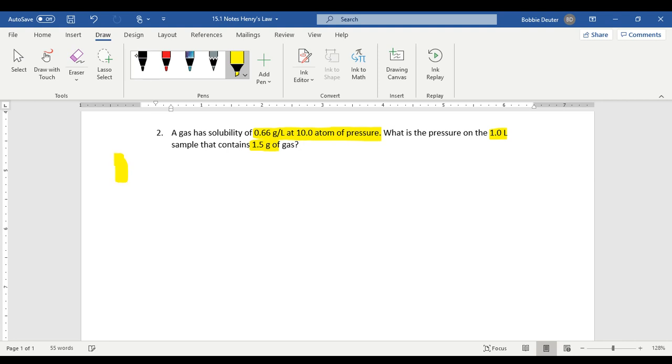So here's what we do now. Our S1 is equal to 0.66 grams per liter. Our P1 is equal to 10 ATMs. That's a spelling error autocorrect on my part.